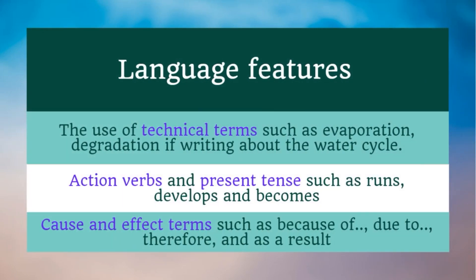Explanation text will use some technical terms about the topic it is discussing, along with action verbs — verbs of physical moves — and present tense to explain the process. It won't use past tense as it doesn't tell about past events. Another language feature is the use of conjunctions to signal cause and effect, such as 'because of,' 'due to,' 'therefore,' 'as a result,' and other conjunctive devices of this kind.